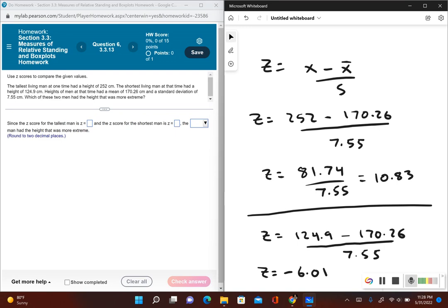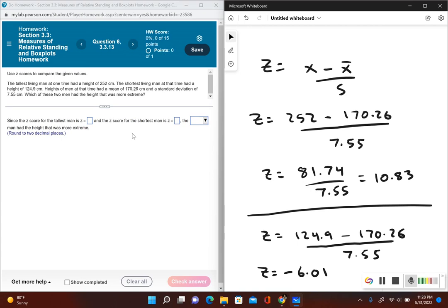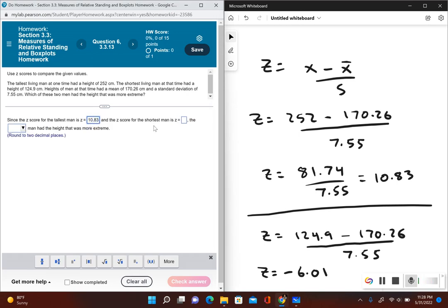So now, since this z-score is negative, that tells us that the shortest man has a height that's furthest away from the mean would be the tallest man, since this is 10.83 standard deviations above the mean, where the shortest man is 6.01 standard deviations below the mean, so the tallest man has a height that's more extreme.